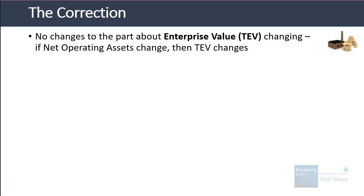Here's the correction. There are no changes to the part about how enterprise value changes. If net operating assets change, then enterprise value changes. That's pretty simple and straightforward.